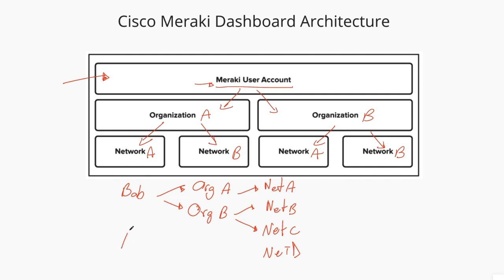We can have another person, Anna, and Anna has access to her own organizations — organization C. And in organization C, there is just one network, network D. So Anna cannot see the organizations and networks from Bob because it's a different user account, and Bob cannot see any organization from Anna. That's how it's divided between all the user accounts inside of the Cisco dashboard.